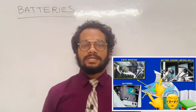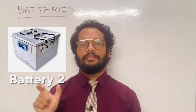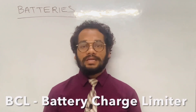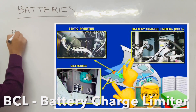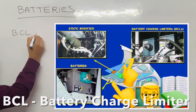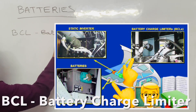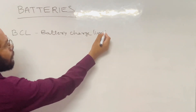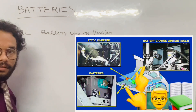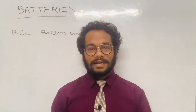There are two batteries — Battery 1 and Battery 2. Each battery has its own BCL, that is Battery Charge Limiter. The purpose of the BCL is to monitor the charging cycle of the battery.